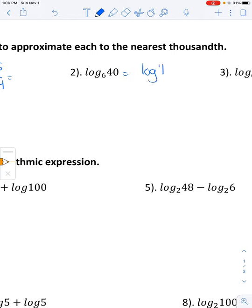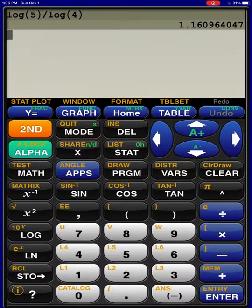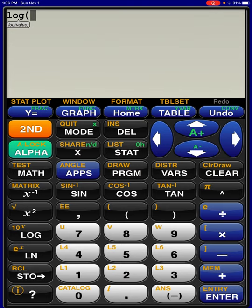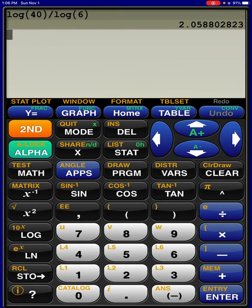So here we take the log of 40 divided by the log of 6. It's easy to remember the base goes on bottom because the base is subscripted. So it's kind of set up in such a way that makes it easy to remember, in my humble opinion. 2.059.